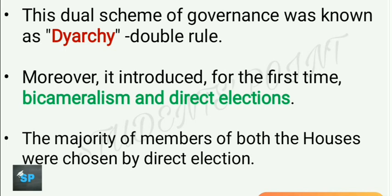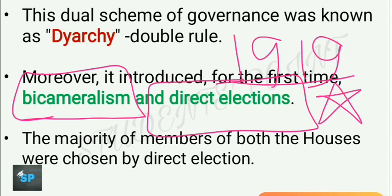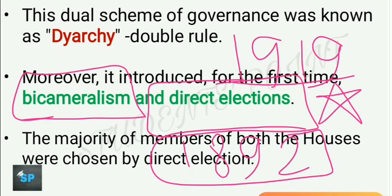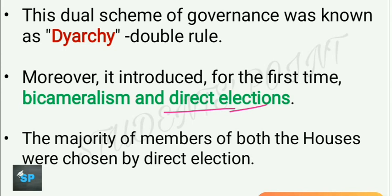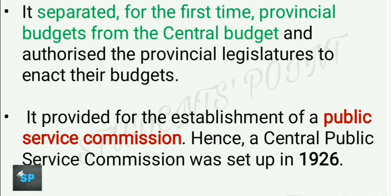The majority of members of both houses were chosen by direct elections. This act also separated for the first time provincial budgets from the central budget and authorized provincial legislatures to enact their own budgets. It also provided for the establishment of a Public Service Commission — hence the Central Public Service Commission was created in 1926 for the recruitment of civil servants. The act also required that three of the six members of the Viceroy's Executive Council, other than the Commander-in-Chief, were to be Indian.